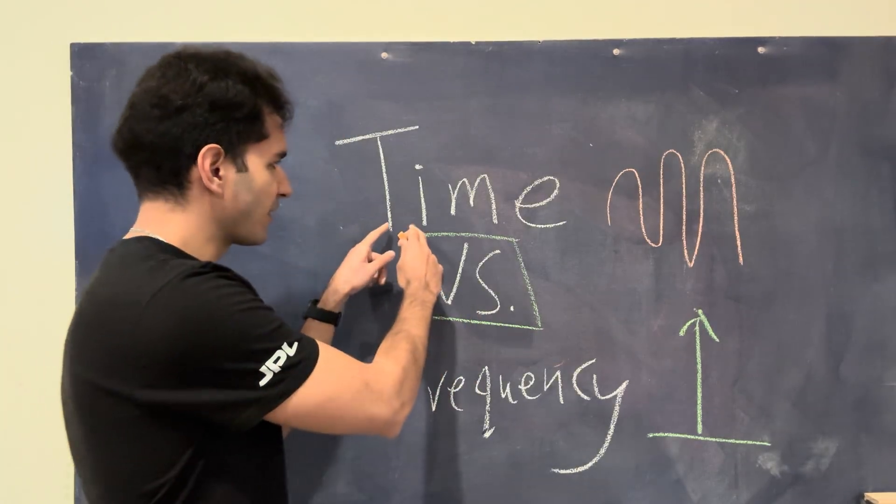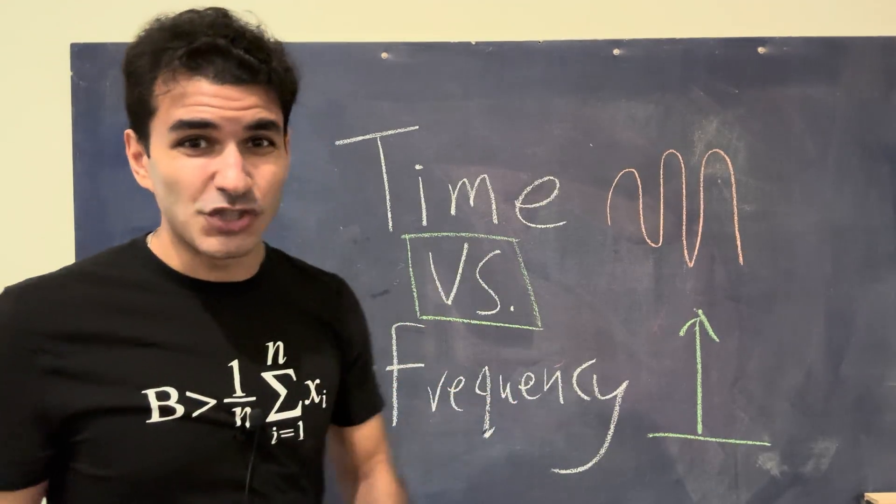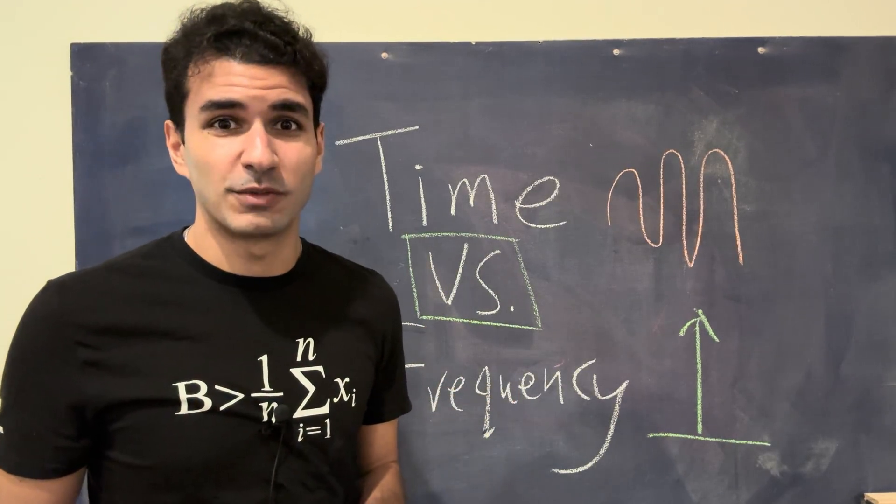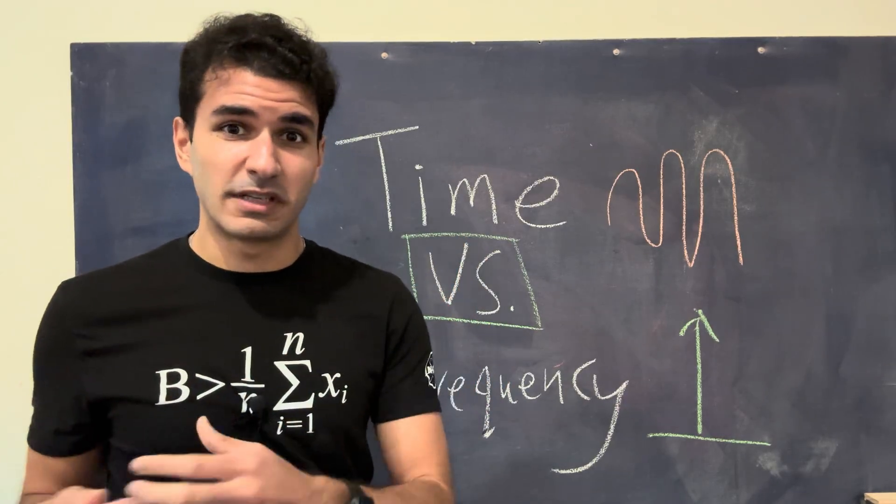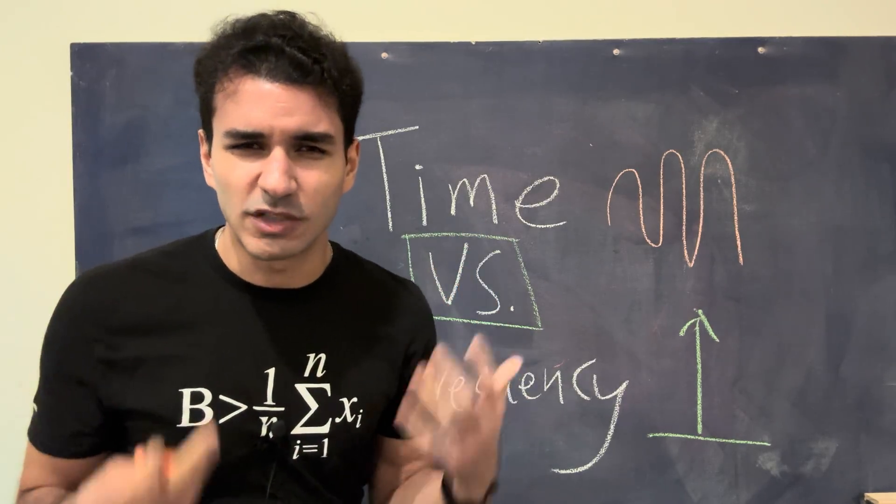So what I have over here is something that says time versus frequency, because this really is just the essence of what a Fourier transform does. Now, a Fourier transform takes a signal in time, and it converts it to a signal in frequency. But what does that even mean? Why is that even important?